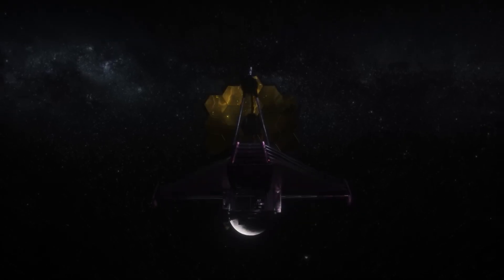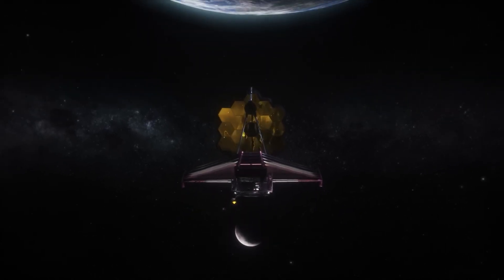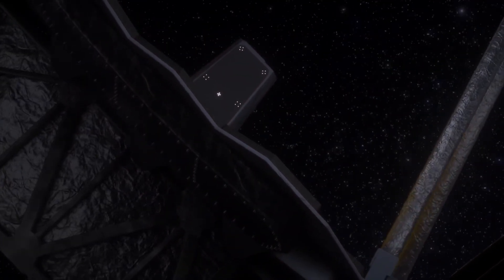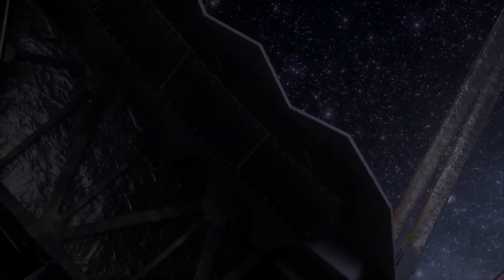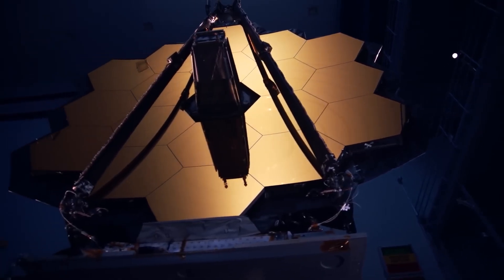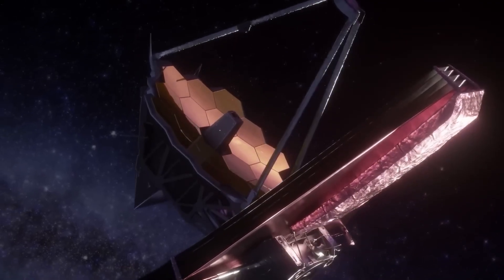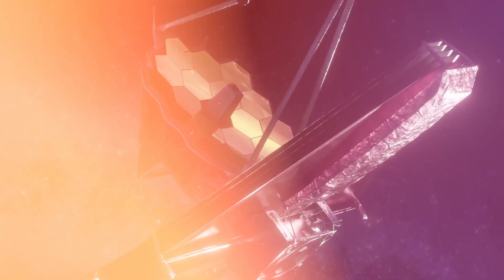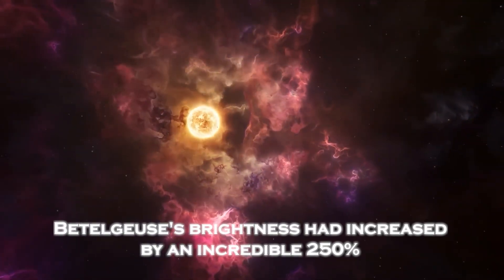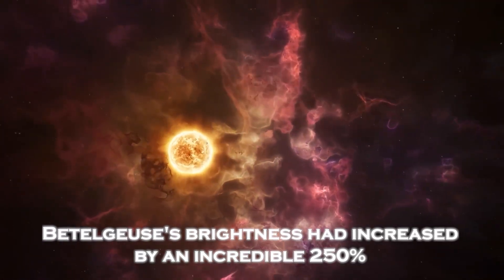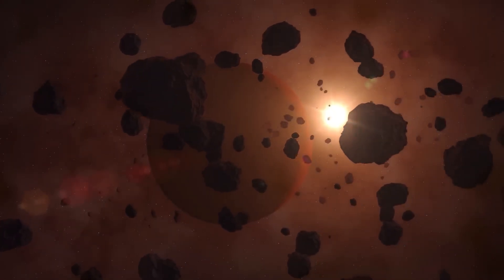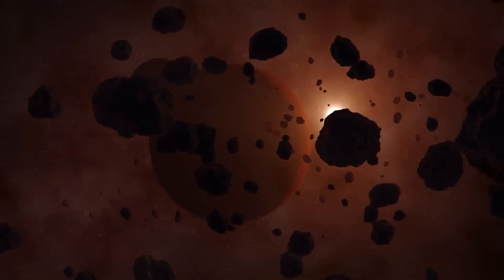The James Webb Space Telescope, equipped with advanced infrared capabilities, played a pivotal role in detecting this sudden change. By peering through the thick layers of dust and gas surrounding Betelgeuse, the JWST provided scientists with a clear view of the star's surface and surroundings. What it discovered was astonishing: Betelgeuse's brightness had increased by an incredible 250% in just a few weeks, a rapid and unexpected change that suggested something unusual was going on inside the star.